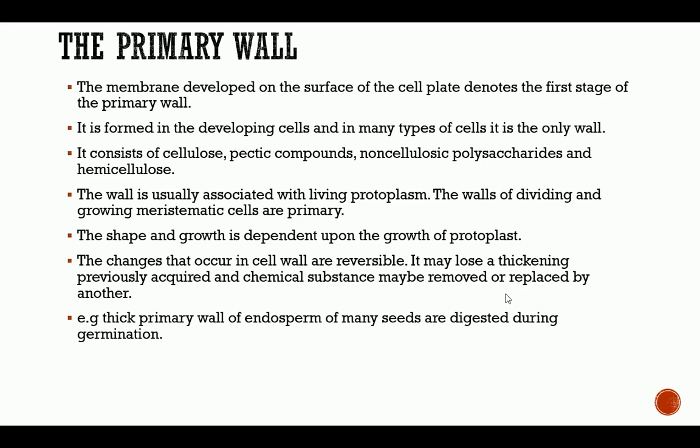The wall is usually associated with living protoplasm. After the plasma membrane you have the primary cell wall. The walls of dividing and growing meristematic cells are primary, and the shape and growth is dependent upon the growth of the protoplasm. The changes that occur in the primary cell wall are reversible — it may lose a thickening previously acquired, and chemical substances may be removed or replaced by another.